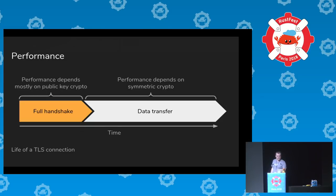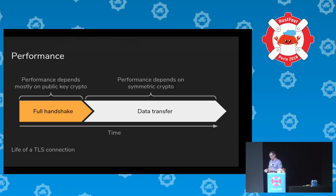On performance: blog posts expand on this section with reproducible results. A TLS connection starts with a handshake involving expensive public-key crypto, then moves to a data transfer stage where the goal is to shovel data through the fastest crypto implementation without excessive copying or overhead.